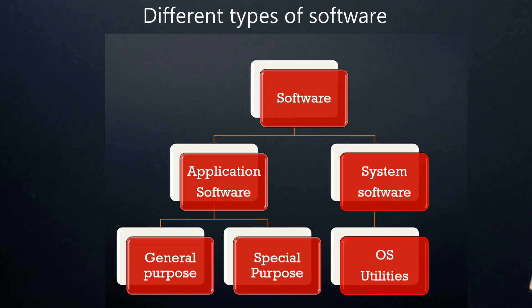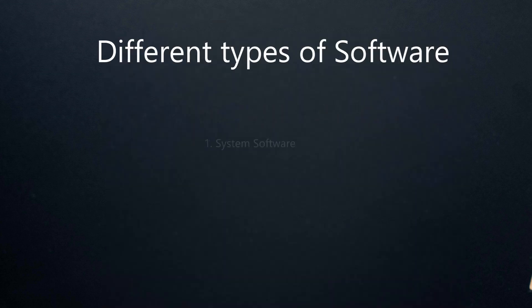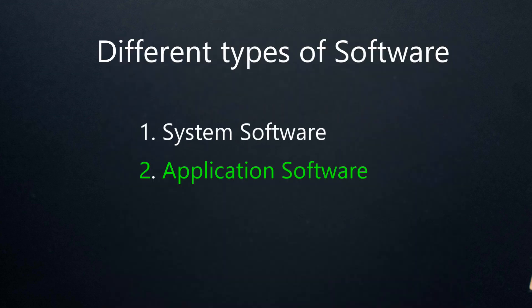Now, we are going to see different types of software. These are system software and application software.